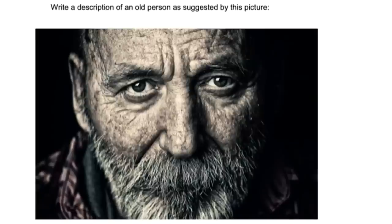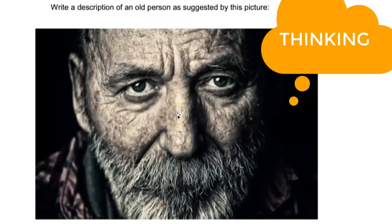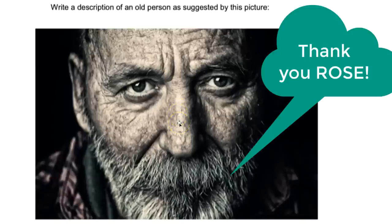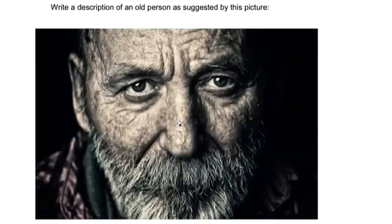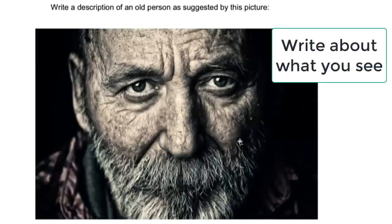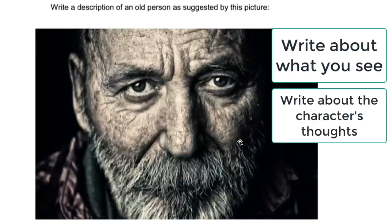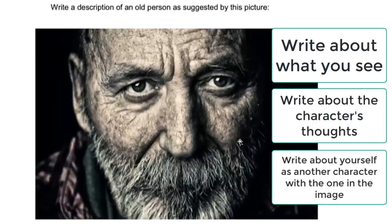Sometimes the examiners are so kind and give us a picture of a face. If this happens to you, you are in for a top grade straight away, because one massive advantage of having a face is that you get to describe what the person looks like but also what they are thinking. We are going to meet a brilliant student called Rose. She emailed me this, and she has doubled that advantage by not only including the character in the picture, but putting her own self as another character into the description. Let's jump in and see how it works.